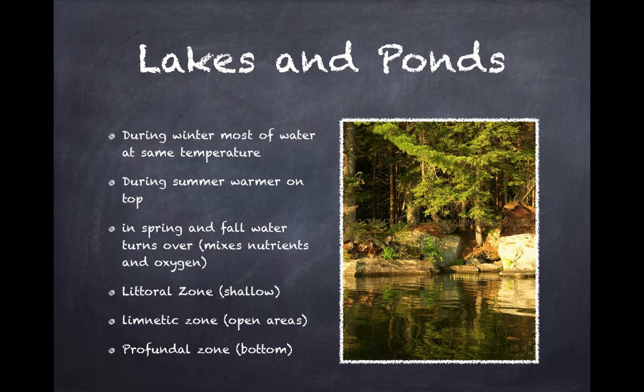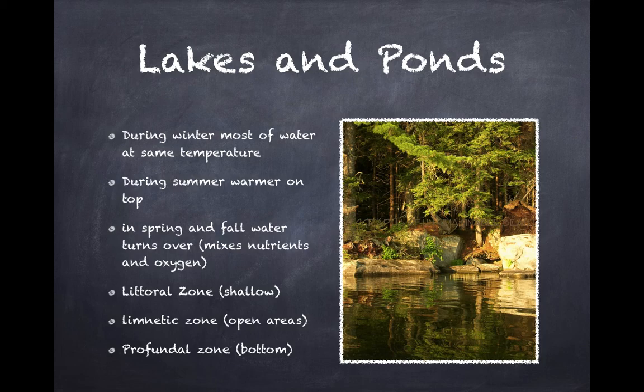Lakes and ponds — this is a picture of Pleasant Pond in Island Falls. When you think of a lake and a pond, it's important to realize that during the winter, most of the water is at the same temperature. We always have a layer of ice over it, and below that layer, the water is from top to bottom just about the same temperature. During the summer, sunlight warms the surface parts of the water while the deeper parts are colder, leading to changes in temperature.